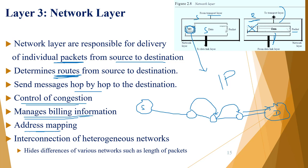The network layer also handles address mapping — converting public IP addresses to private IP addresses and vice versa — and enables interconnection of heterogeneous networks. The major tasks of the network layer are defining routes, congestion control, address mapping, billing information, and interconnecting different network types. Many routing protocols run in this layer, which will be studied in upcoming courses.